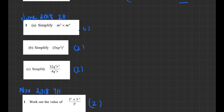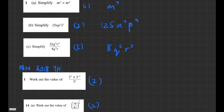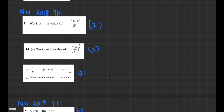Some worked examples: m³ × m⁴ — add exponents to get m⁷. For (5³n)³: 5³ is 125, so you get 125n³. For p^(3×3) = p⁹. For fractions with the same base, subtract the powers: 32q⁹ / 4q³r: 32/4 = 8, q^(9−3) = q⁶, r^(4−1) = r³, giving 8q⁶r³.